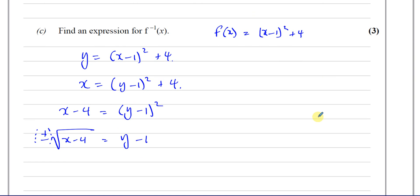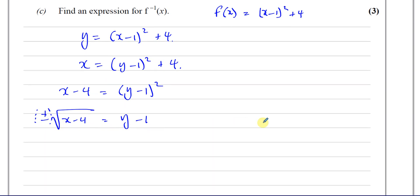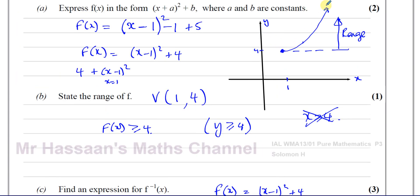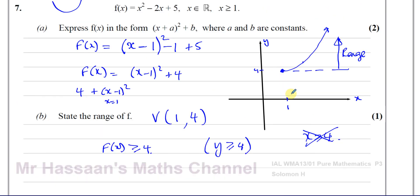We have to figure out whether to use the positive or negative square root — we can't use both, otherwise it won't be a one-to-one function. The only reason this has an inverse is because the original function is one-to-one. If it were many-to-one, the inverse would be one-to-many, which is not a function. It has to be a one-to-one function for the inverse to be a function.